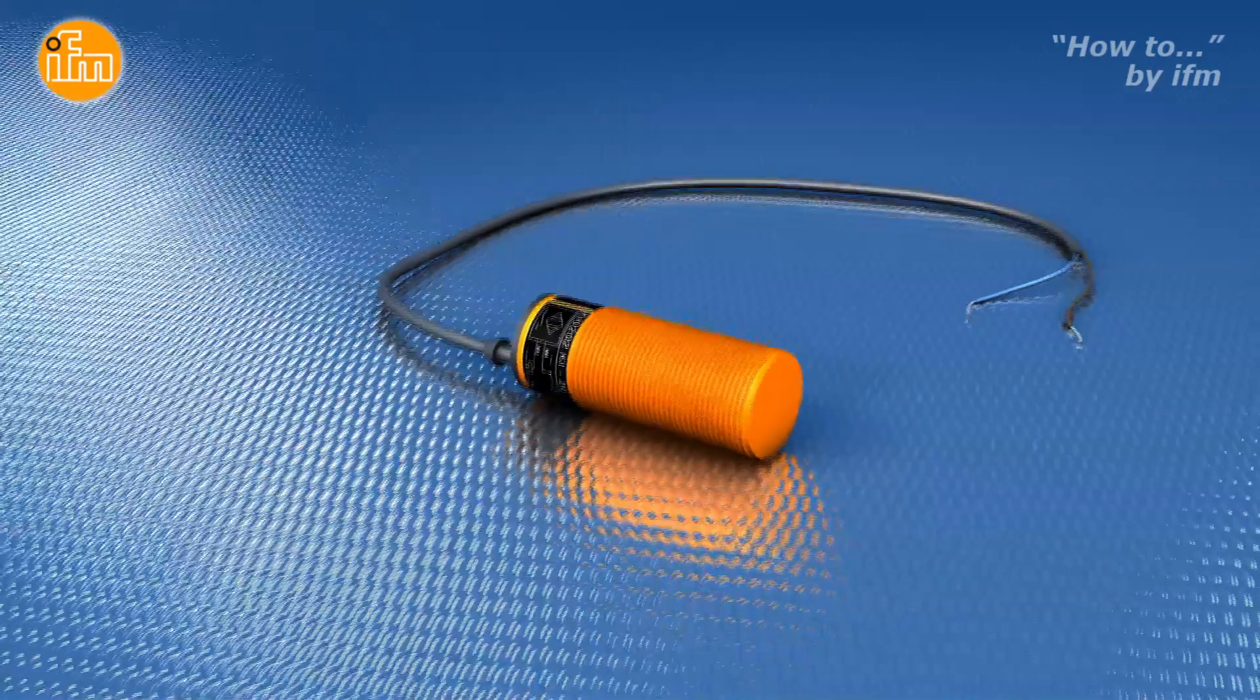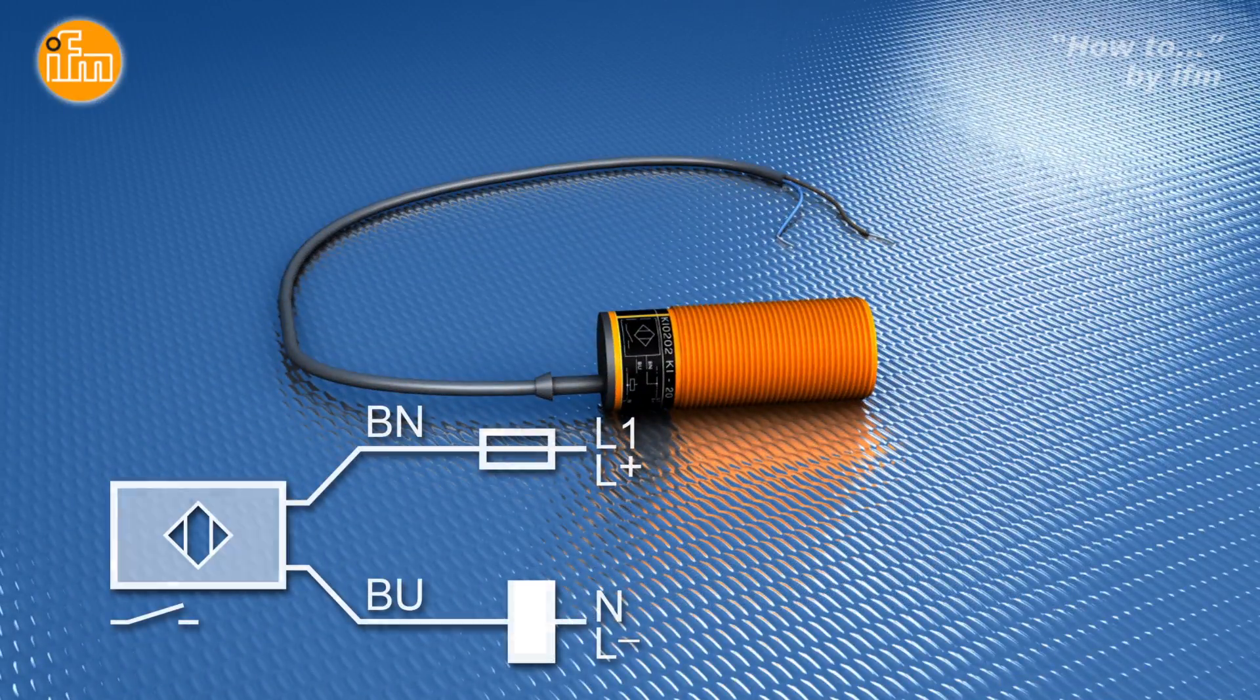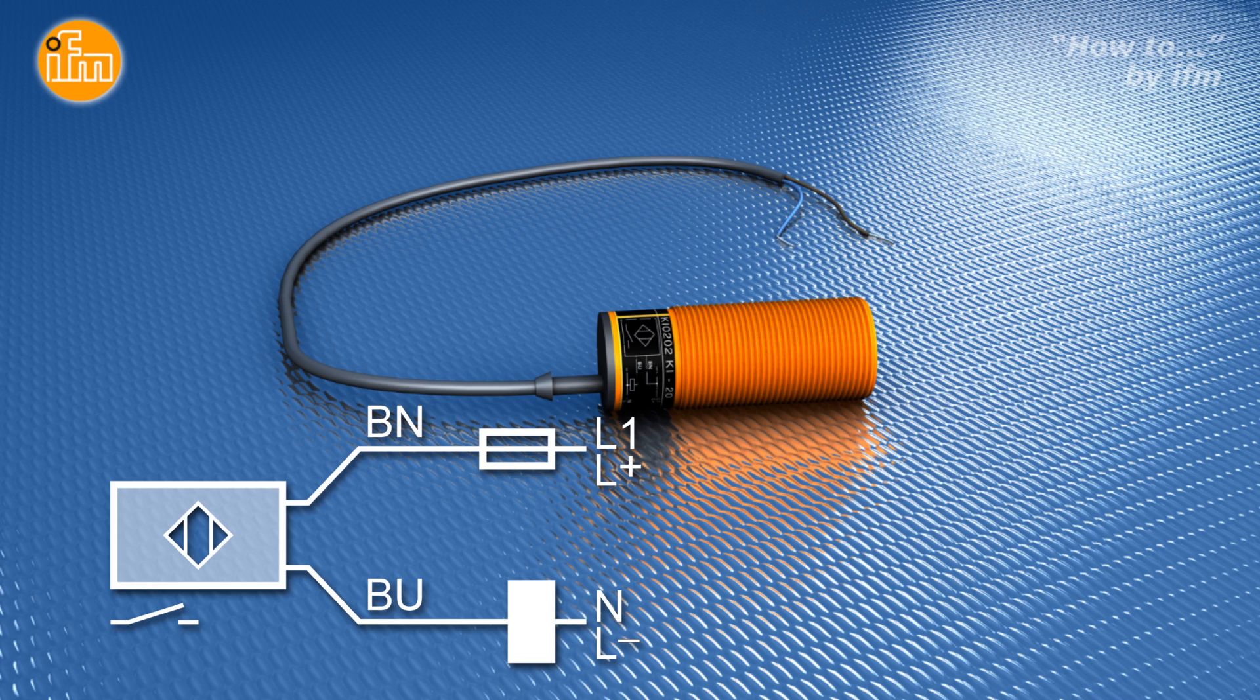The unit we will be wiring is a Ki0202, and you can see by the wiring diagram that a fuse is used for protecting the sensor.